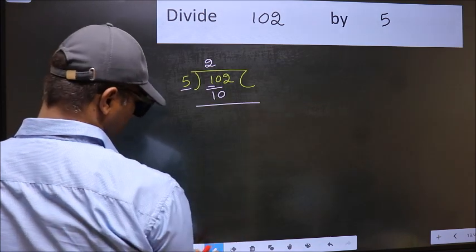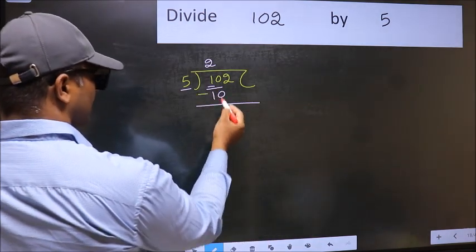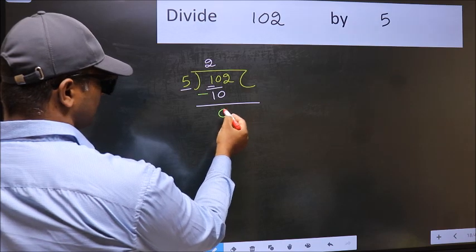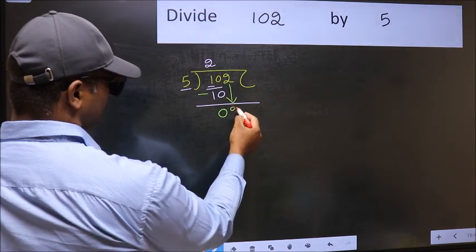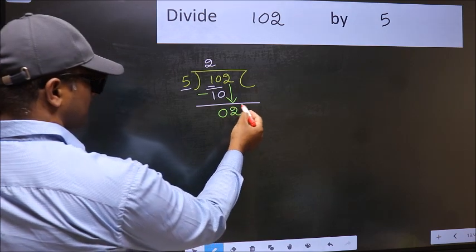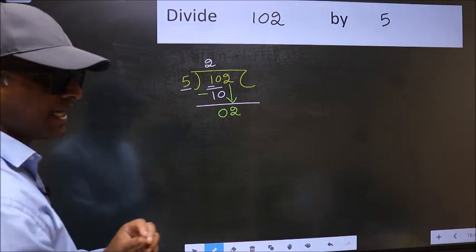Now you should subtract. 10 minus 10, 0. After this, bring down the beside number. So, 2 down. After this step, the mistake happens.